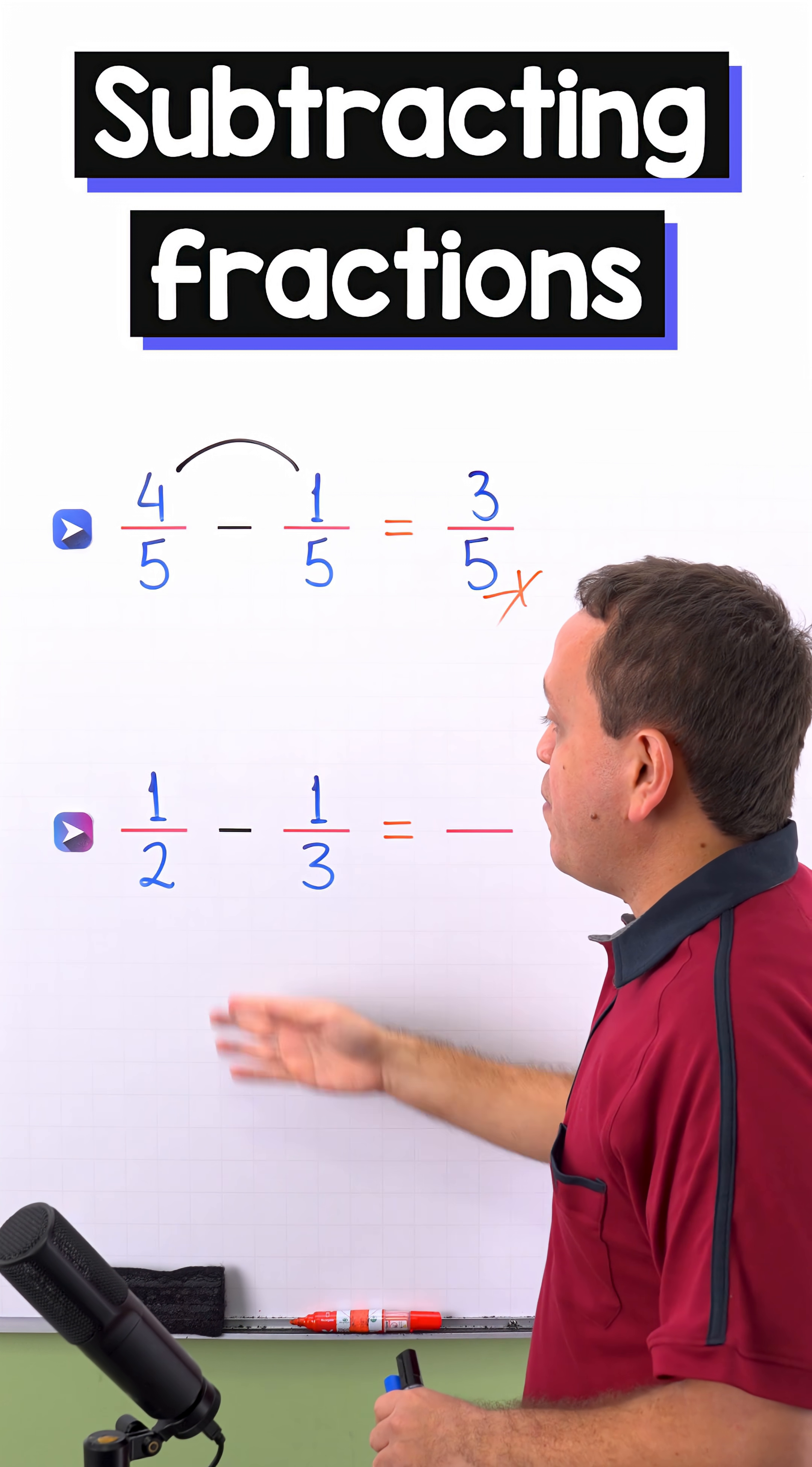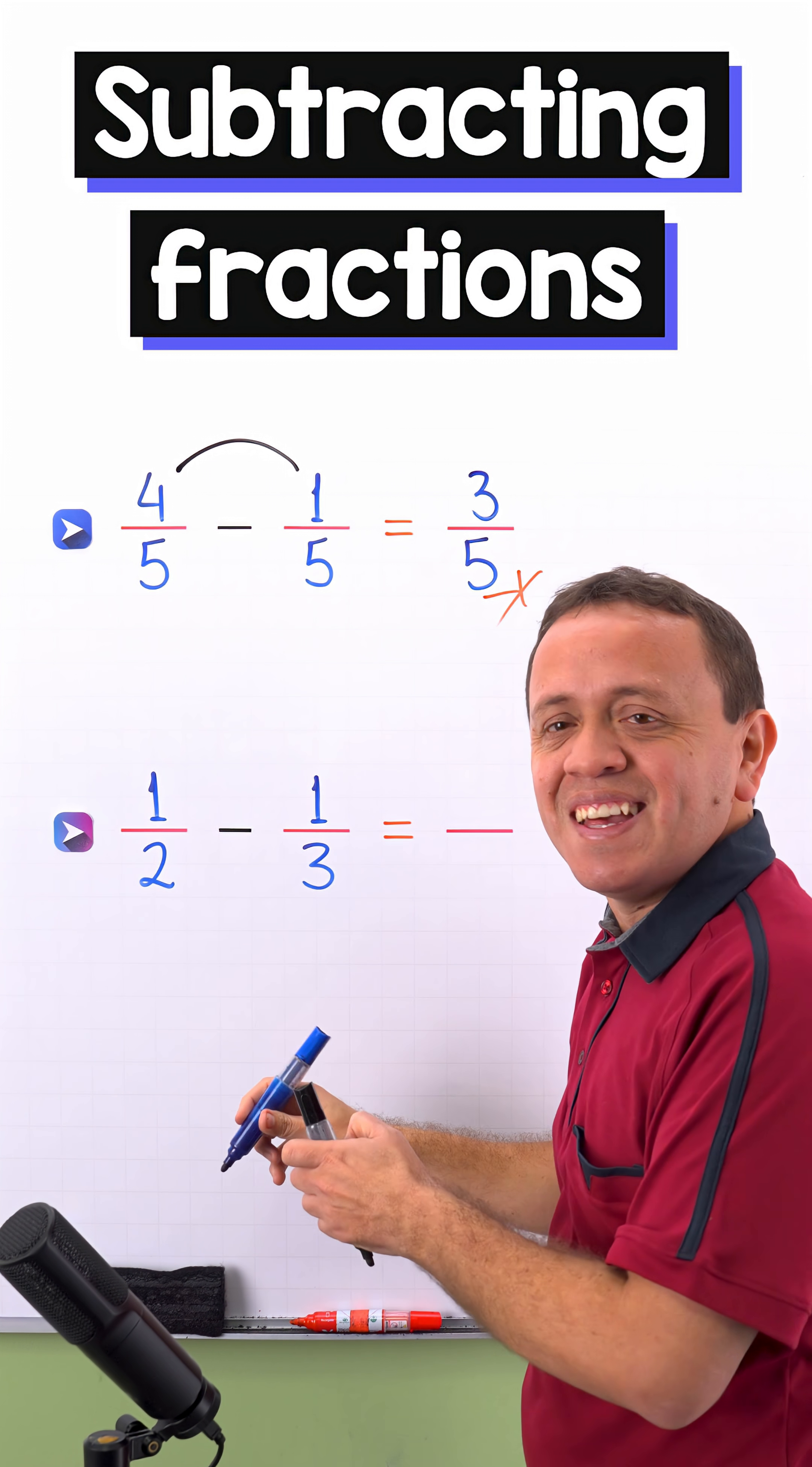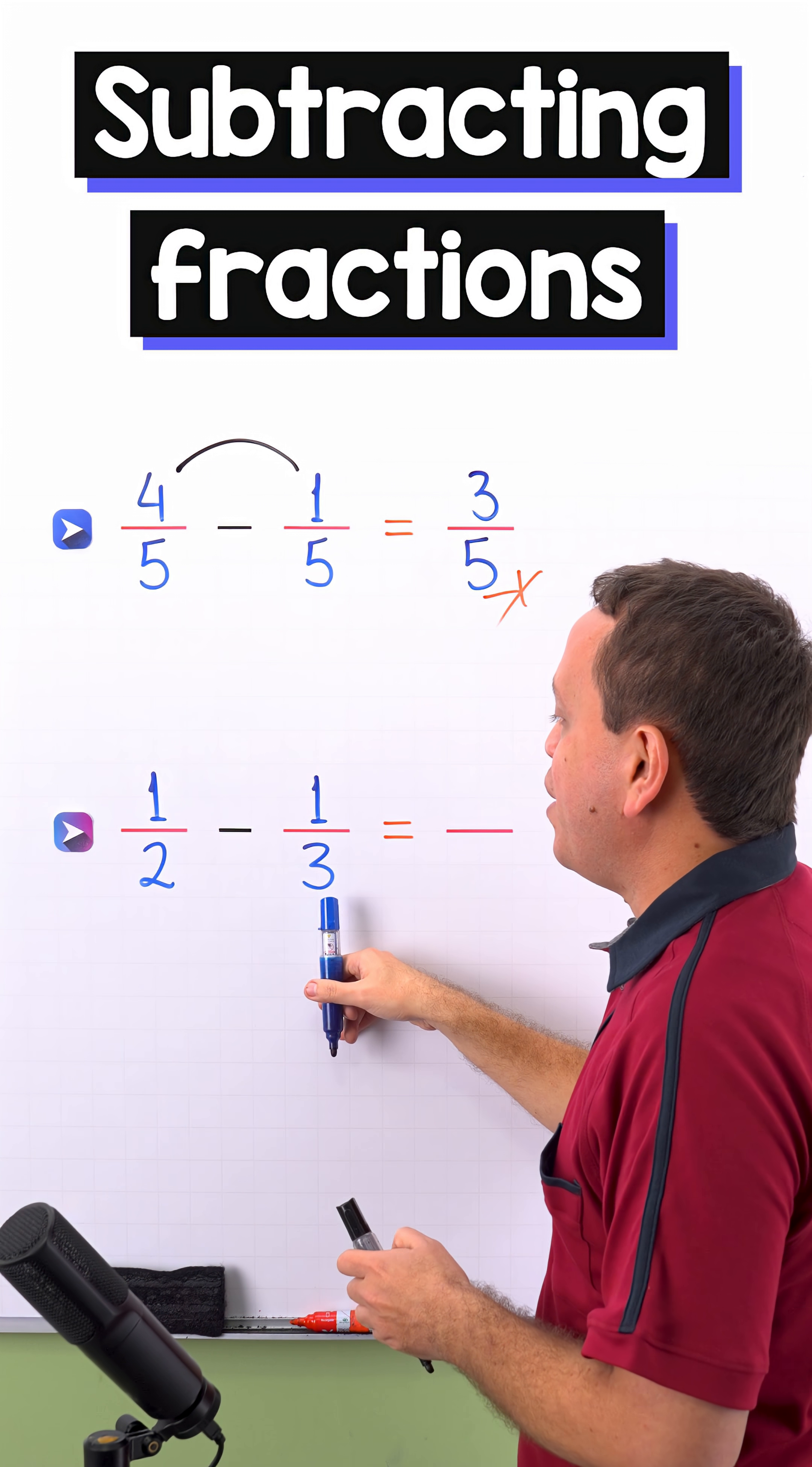In the second example, we have 1 half minus 1 third. These two fractions have different denominators because we have 2 on the left and 3 on the right.